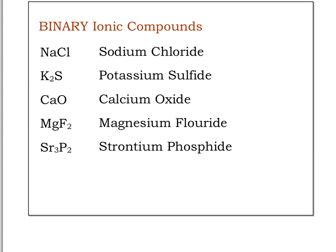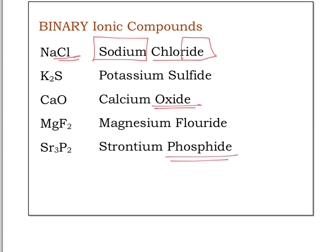Looking back at these examples: the cation or metal is always named first, the non-metal is named second and changed to -IDE. Some names sound funny — oxygide sounds funny so we say oxide, and phosphoride sounds funny so we say phosphide. There aren't strict rules for this, but by hearing them we can tell when to make that change.